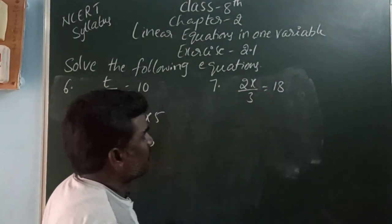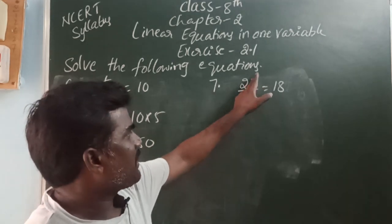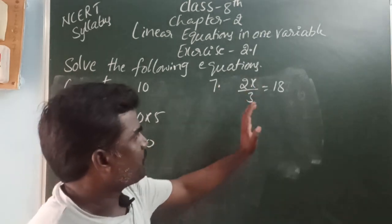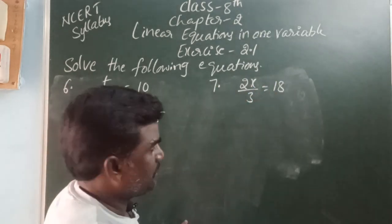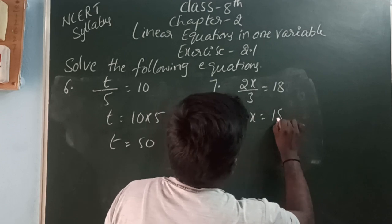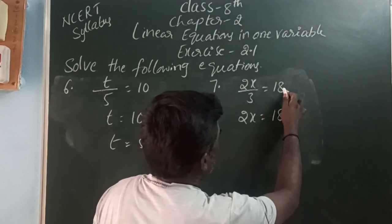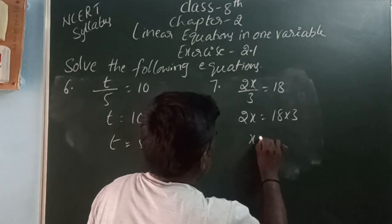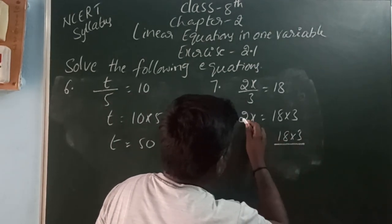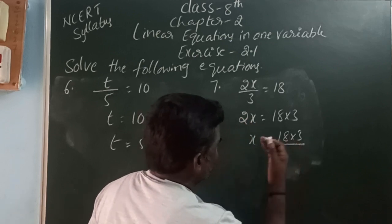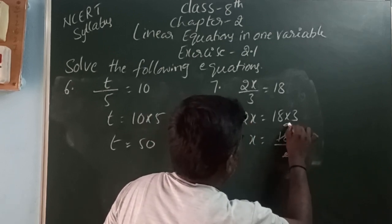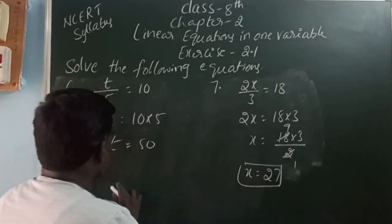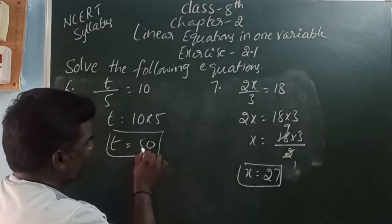2x by 3. Here, the variable x is multiplied by a constant and divided by a constant. First, the divide constant 3 is moving to the right side and it becomes multiple. So 2x is equal to 18 into 3. Next, 2x means 2 into x. The multiple 2 is moving to the right side and it becomes divided. So x is equal to 18 into 3 divided by 2, which gives x equal to 27. The value of the variable is 27.